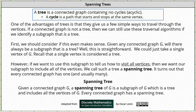One of the advantages of trees is that they give us a few simple ways to travel through the vertices. If a connected graph is not a tree, we can still use these traversal algorithms if we identify a subgraph that is a tree. We should consider if this even makes sense — given any connected graph G, will there always be a subgraph that is a tree? Well, this is straightforward. We could just use a single vertex of G, and recall that a single vertex is considered a tree. However, if we want to use the subgraph to tell us how to visit all vertices, then we want our subgraph to include all the vertices. We call such a tree a spanning tree.